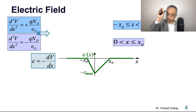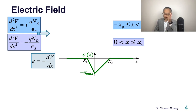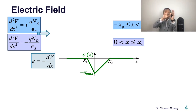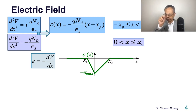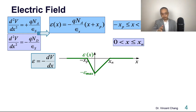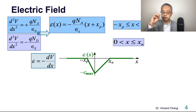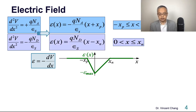Apply the boundary condition: at the left-hand side boundary where x equals negative xp, the field should be zero. This gives us the expression (x + xp). This satisfies two things: it is linear in x, and the boundary condition is satisfied — if you plug in x equals negative xp, the field becomes zero. Similarly for the right-hand side, it becomes positive Q·Nd / εs times (x − xn).